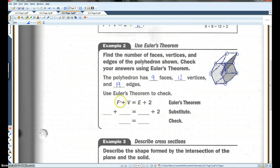Use Euler's theorem to check. F plus V equals E plus two. F is nine. V is twelve. E is nineteen. Nine plus twelve is twenty-one. Nineteen plus two is also twenty-one. So we're good.